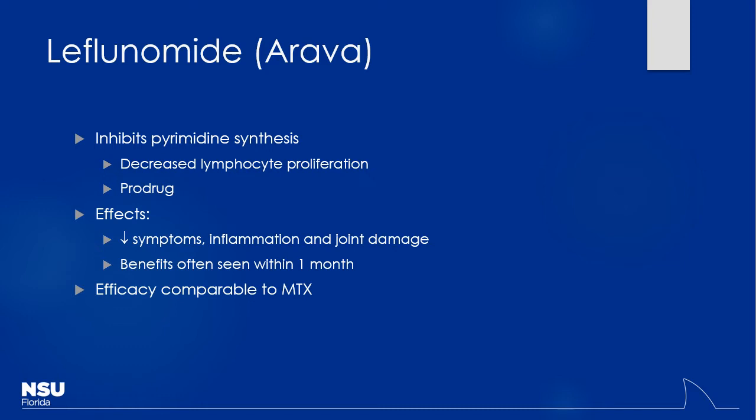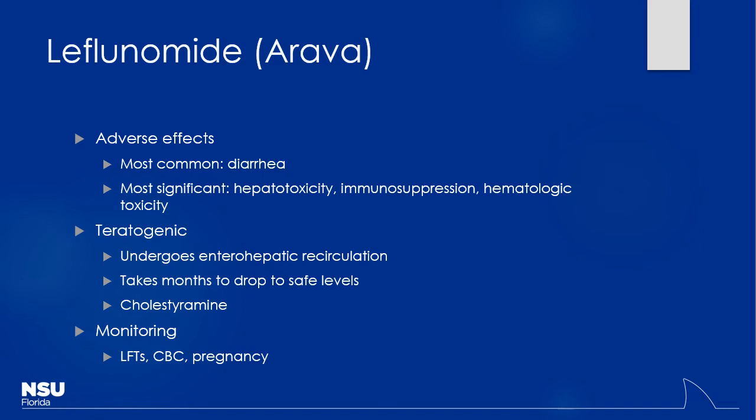Up next we have leflunomide — another anti-metabolite. This one decreases pyrimidine synthesis instead of purine synthesis, helping to decrease lymphocyte production and overall inflammation. It's actually a prodrug that gets activated by the liver into the active form. It's pretty similar to methotrexate in terms of toxicity, with still pretty fast onset — within a month or so. This could be another alternative if methotrexate isn't a good option.